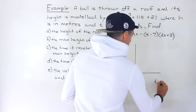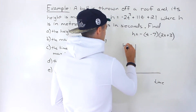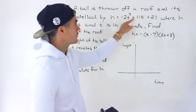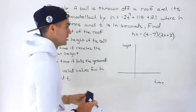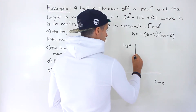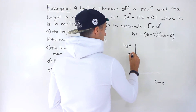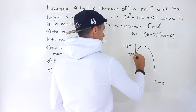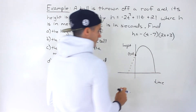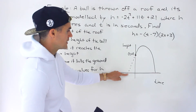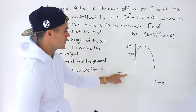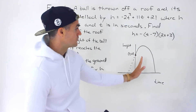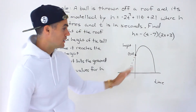On the graph, the horizontal axis is time and the vertical axis is height. At time zero, plugging in t equals 0 gives a height of 21, so when the ball is thrown off the roof it starts at a height of 21 meters — that's the point (0, 21). The ball goes up from there. There will be a negative t-intercept which we'll erase later, but we're going to use it along with the positive intercept to find the maximum value.